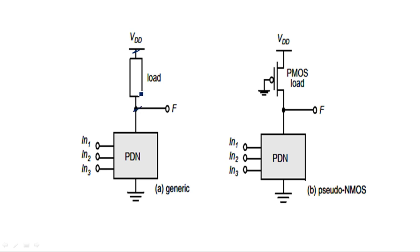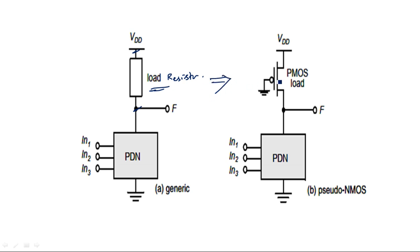What we have done is removed the pull up network and replaced it with a load resistor. The reason to remove the pull up network is that both the pull up and pull down networks implement the same logic function. Whatever logic is implemented with PMOS can also be implemented with NMOS, so they thought to use only a simple load resistor instead.